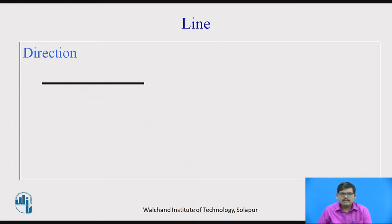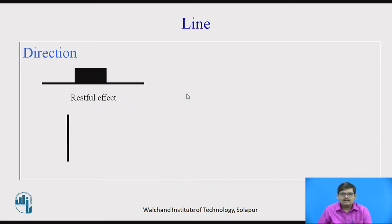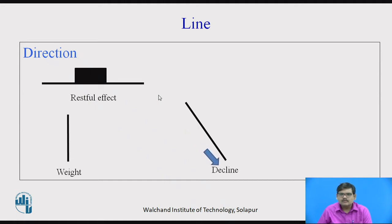A horizontal line looks stable, and when you place an object onto it, we feel that this object is resting on this horizontal line. This gives a feeling of stability or a sense of restfulness. A vertical line suggests weight and defines gravity. A downward inclined line shows a descent, moving downwards, slope, or gradually decreasing — it defines decline.